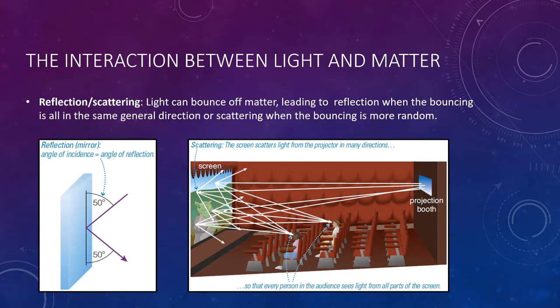The fourth type that we have is reflection and scattering. Light can actually bounce off of matter, which is why we see objects, leading to what we call reflection when the bouncing is all in the same general direction or scattering when it bounces in a more random way. A mirror, for example, reflects light along a simple path. The angle at which the light strikes the mirror is the same angle at which it is reflected. A movie screen, however, scatters light in many different directions so that each member of the audience can watch the movie. The pages of a book do the same thing.